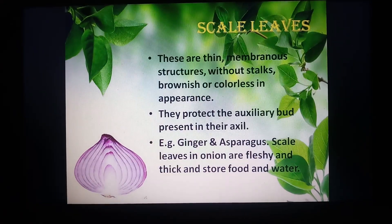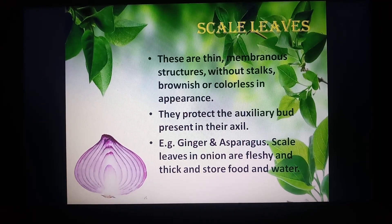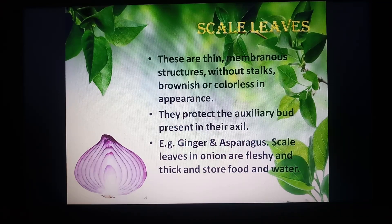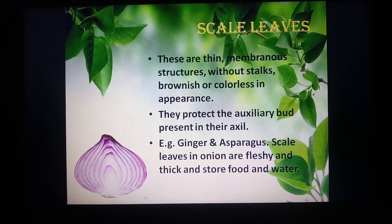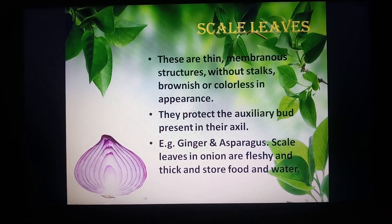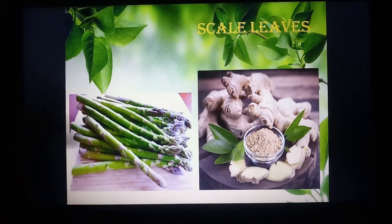The next modification is scale leaves. In this, the leaves are modified in the shape of scales and help in protecting the buds or other inner parts of the plant. They also store food and water, making the leaves thick and fleshy. Examples are onion, asparagus, and ginger.